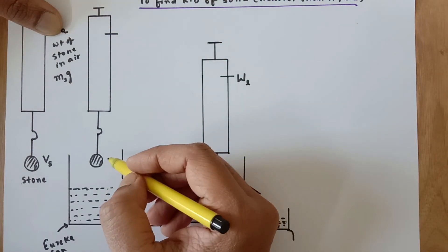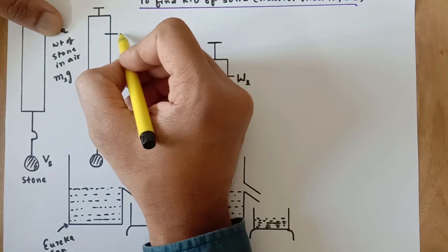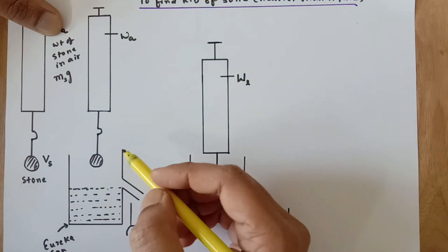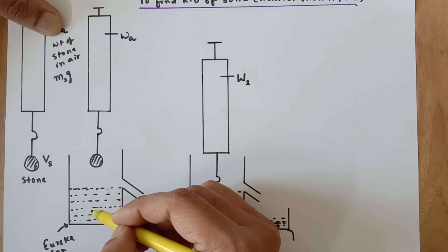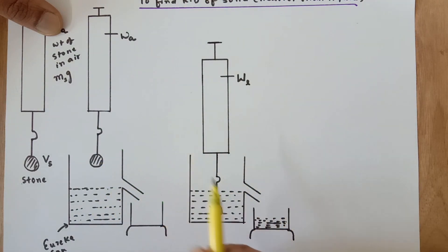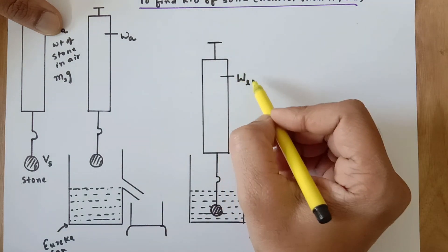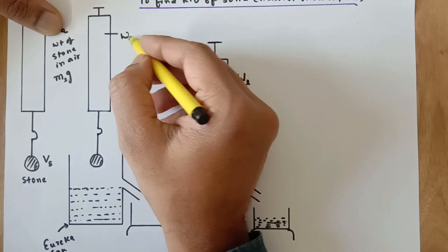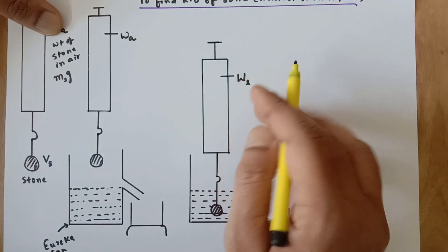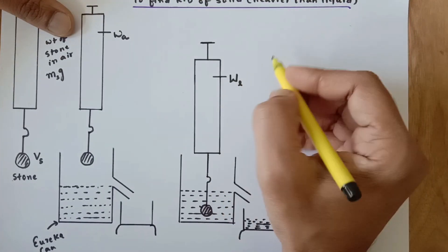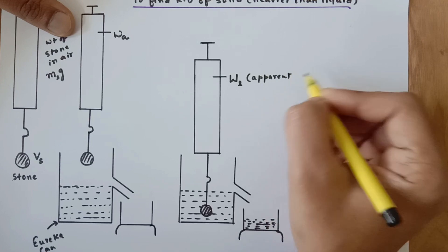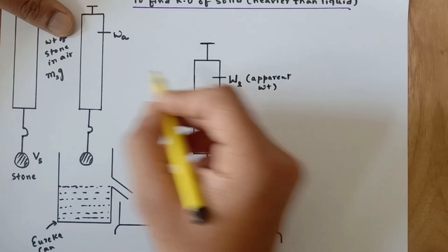Since the stone is not yet immersed inside the liquid, it is still being weighed in air. The moment I immerse it completely inside the liquid, the liquid is going to exert upthrust or buoyant force, resulting in a decrease in weight. Due to the upthrust acting in the upward direction, this weight is going to reduce. This is the weight of the object in the liquid, also known as apparent weight.